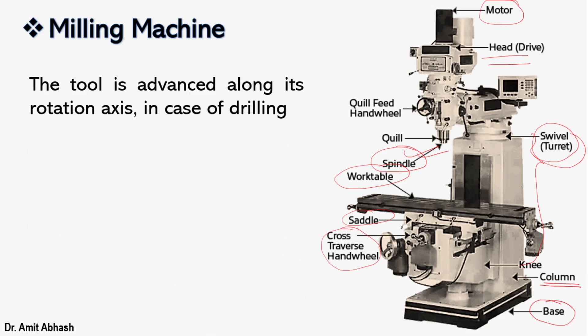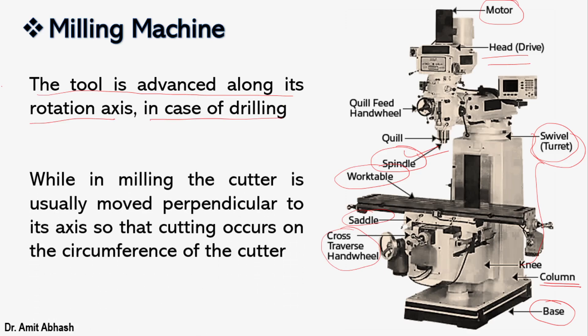One advice I am going to discuss here: the tool is advanced along its rotation axis in case of drilling machine as we have seen. While in milling, the cutter is usually moved perpendicular to its axis so that cutting occurs on the circumference of the cutter. So this is regarding the milling and drilling machine. This is basically a difference in the movement of the tool. You should just remember these things also.